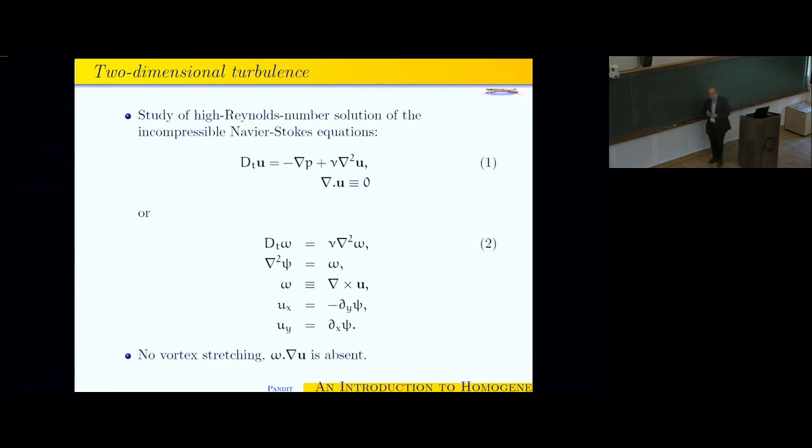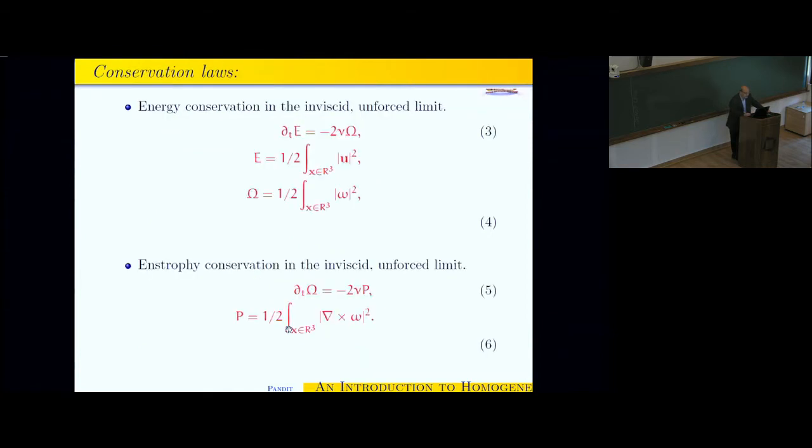I showed you some flows in two-dimensional soap films. For those, you can use a two-dimensional variant of the Navier-Stokes equation. So that's again incompressible. But in this case, it is advantageous to use the vorticity omega, which is curl of U, to write down the equations in what's called the vorticity stream function notation. And then del squared psi, psi is the stream function, which is related to U, the components of U in this way. And then you get a nice way of writing the equations.